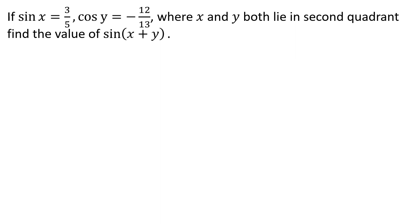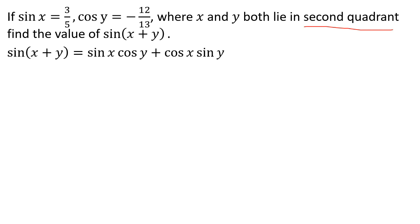Now let's look at a worked example. Given: sin x equals 3/5 and cos y equals minus 12/13, where both x and y lie in the second quadrant. Find the value of sin(x+y). Using the formula: sin(x+y) equals sin x cos y plus cos x sin y.